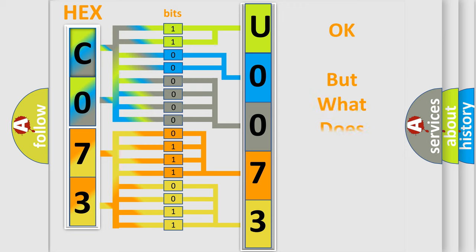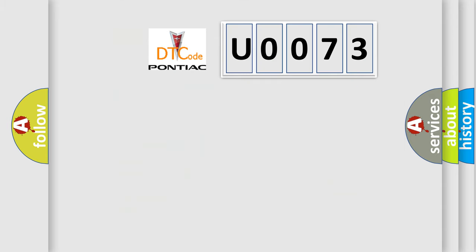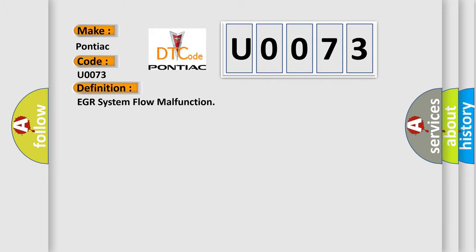We now know how the diagnostic tool translates received information into a more comprehensible format. The number itself does not make sense if we cannot assign information about what it actually expresses. So, what does Diagnostic Trouble Code U0073 interpret specifically for Pontiac car manufacturers? The basic definition is: EGR system flow malfunction.